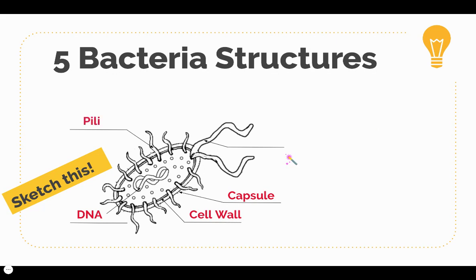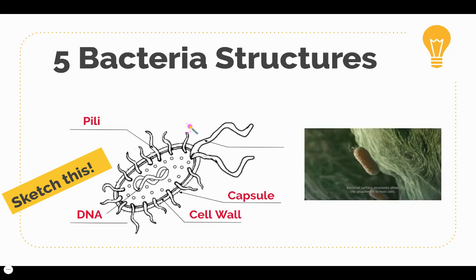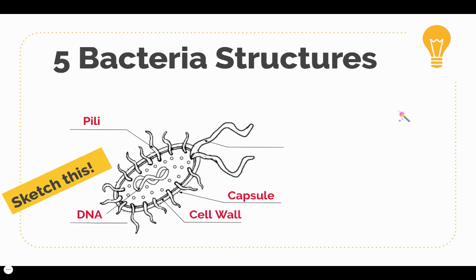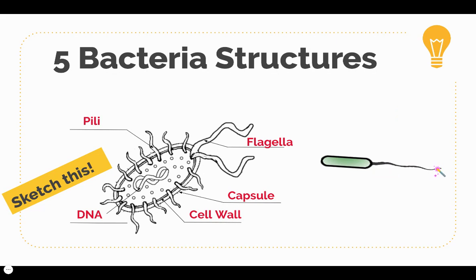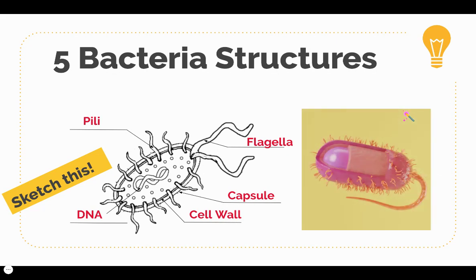The next structure is the pili — these are the finger-like projections coming out of the capsule. They serve the purpose of allowing the bacteria cell to attach to surfaces, including the host cell that the bacteria is trying to infect. The last structure is the flagella. Not all bacteria cells have flagella — they serve the purpose of allowing the bacteria cell to swim in its environment, so you typically only find them on bacteria that live in a watery environment like ponds. Those are the five structures you need to know about bacteria cells.